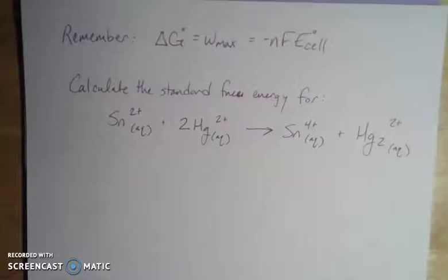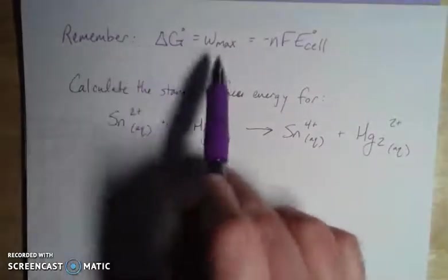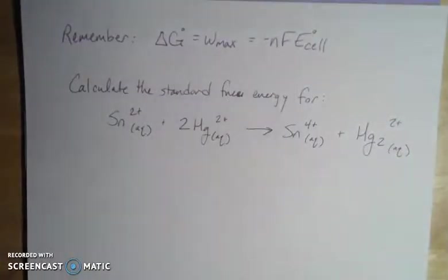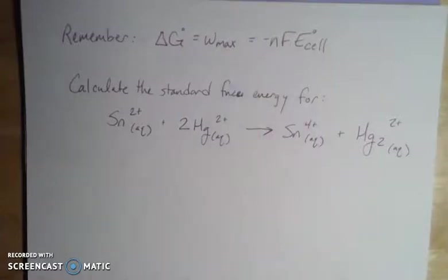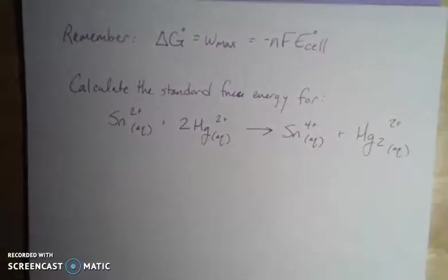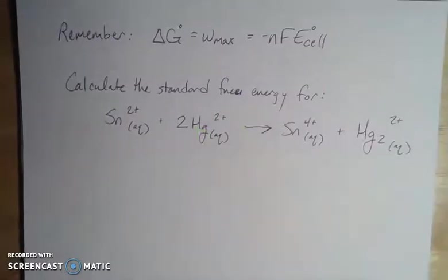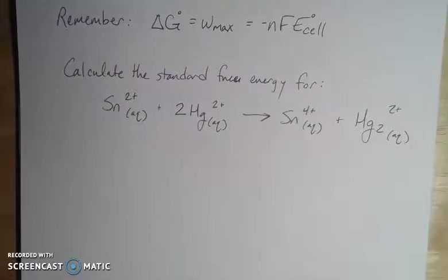Because the spontaneity of a reaction is going to be related to the maximum work. Because we defined our Gibbs free energy before as the maximum amount of work that we can do. So if Gibbs free energy is the maximum work, and the maximum work is my negative nFE_cell, then we should be able to calculate Gibbs free energy for any of these redox processes. I'm going to focus in my doc cam a little bit more. It's a little bit fuzzy, so I'm going to focus in. There we go. That's a little better.